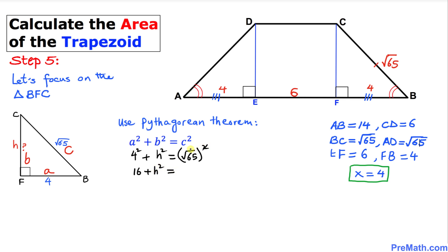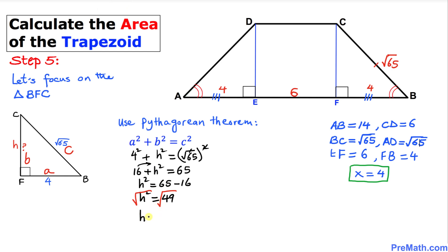Moving 16 to the other side, H² equals 65 minus 16, so H² equals 49. Taking the square root of both sides, H equals 7.